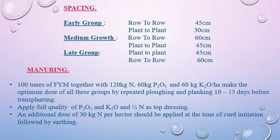Spacing between the crops of cauliflower: in the early group, row to row 45 cm and plant to plant 30 cm. In the medium group, row to row 60 cm and plant to plant 45 cm. In the late group, row to row 60 cm and plant to plant 45 cm.